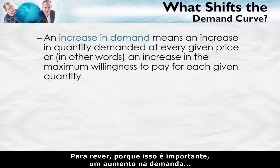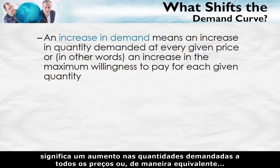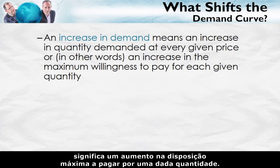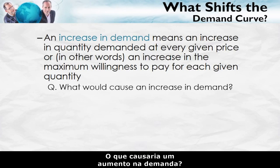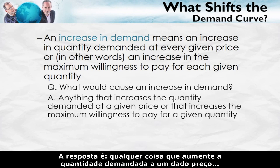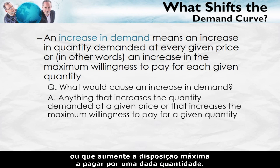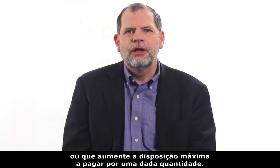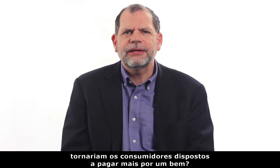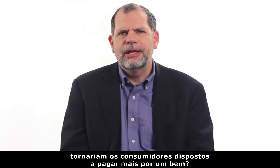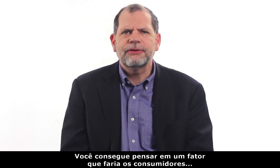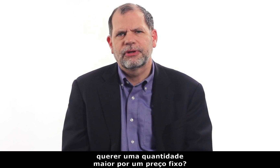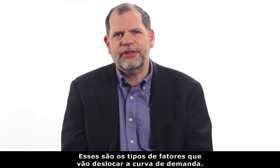To review, because this is important: an increase in demand means an increase in the quantity demanded at every price, or equivalently, it means an increase in the maximum willingness to pay for a given quantity. What would cause an increase in demand? The answer is anything that increases the quantity demanded at a given price, or that which increases the maximum willingness to pay for a given quantity. Can you think of some factors which would make consumers willing to pay more for a good, or want a greater quantity at a fixed price? Those are the types of factors which are going to shift the demand curve.